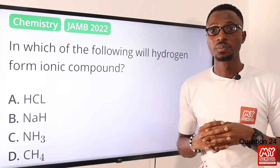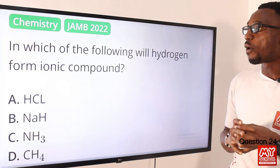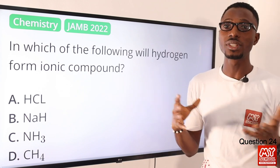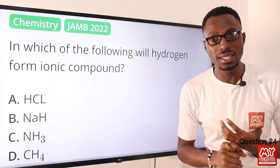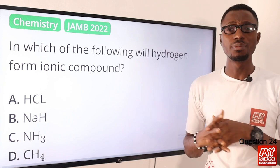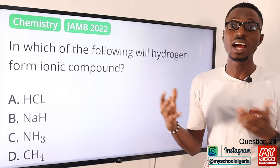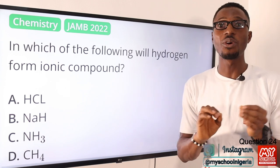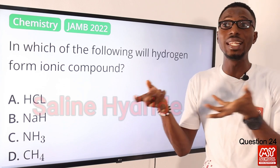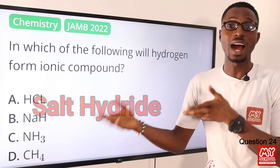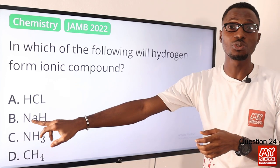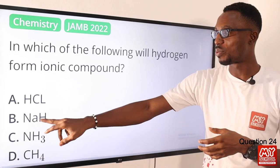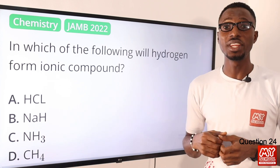Question 24. In which of the following will hydrogen form an ionic compound? Take note — that is an ionic compound. When you have your hydrogen reacting with alkali metals and alkali earth metals, except for probably beryllium, what you are going to be getting is a salt — something called a saline hydride or salt hydride. We know that sodium belongs to group 1, which we refer to as the alkali metals. So option B is the correct option.